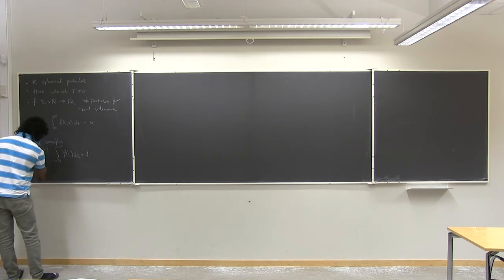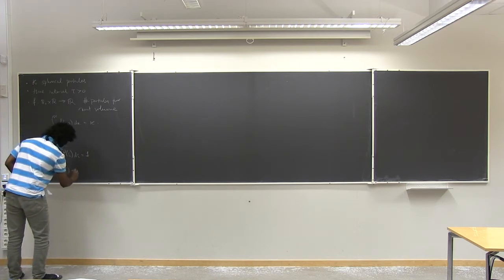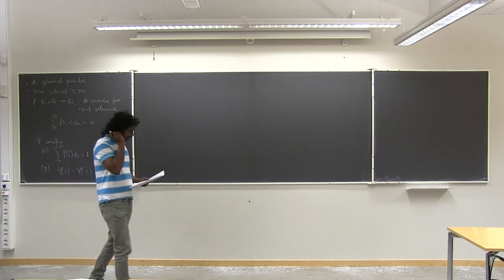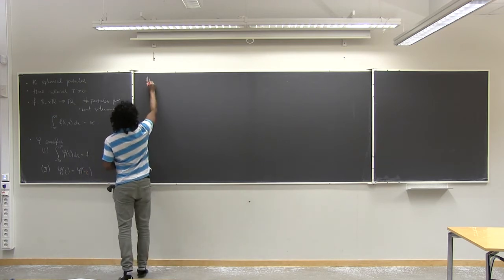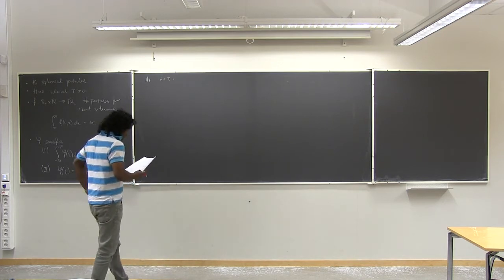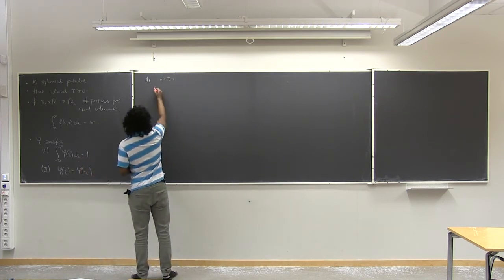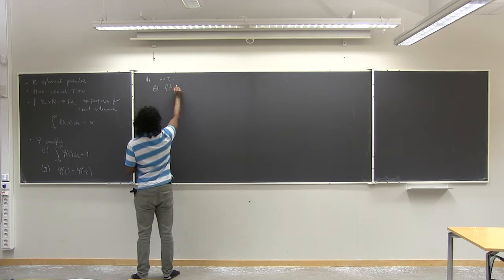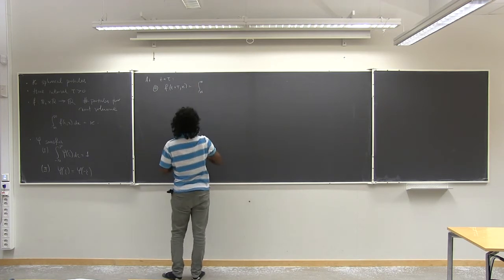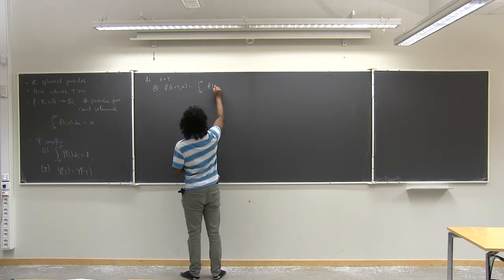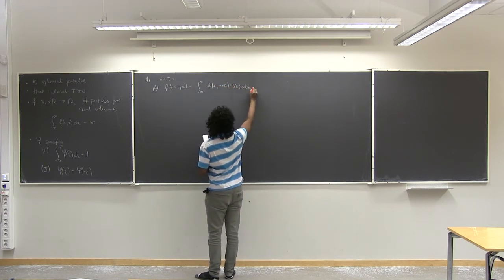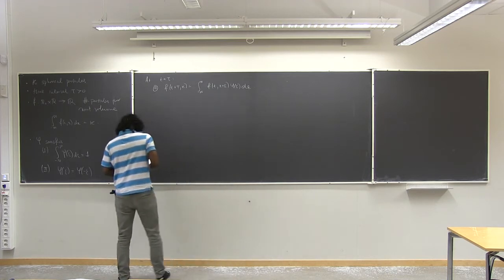And the second thing we're going to assume that it's even. So, think of just the normal distribution. So, now at the time t plus tau, we are going to write f of t plus tau at x. We're going to allow the displacement to be given by this probability. So, this is going to be integral of f of t, x plus epsilon, phi of epsilon d epsilon.